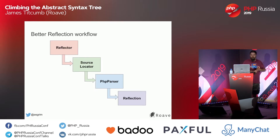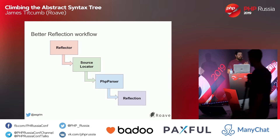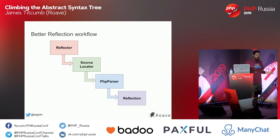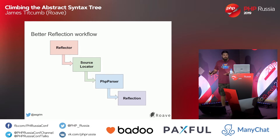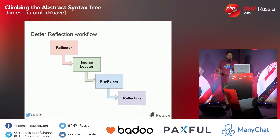Better Reflection was written by me and Marco Pivetta. In short, it's the reflection API that is in PHP, but it uses the AST instead, which means it's very flexible and powerful, and it allows you to do monkey patching as well. We get something called a reflector, which is the public API. We have a source locator, because we might want to reflect from just a string rather than actual code in a file. We pass the code into PHP Parser, and from that we use the AST to simulate what the reflection methods do in PHP.